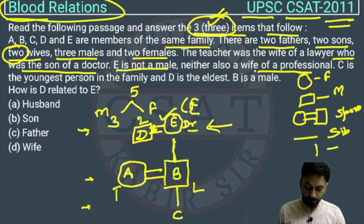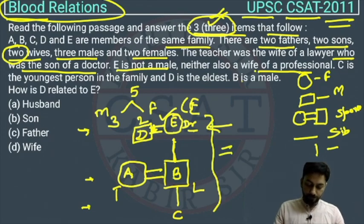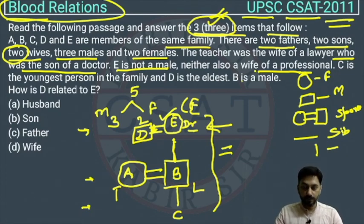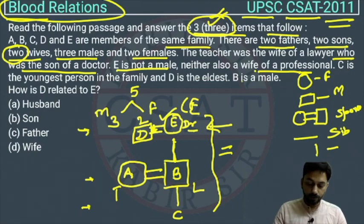So the total five members are A, B, C, D, and E. This is our complete family tree. On the basis of this family tree, we will solve three questions, as mentioned — there are three questions based on this.